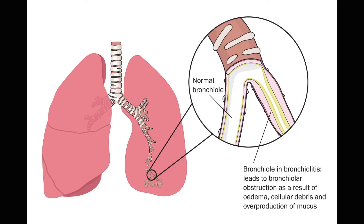The other problem is that with mucus formation way out in those small airways, it's very difficult to get that mucus to move along. If you have bronchitis — an inflammation of the larger bronchi — it's a little bit easier to move some of those secretions along and get them out of the patient's lung.